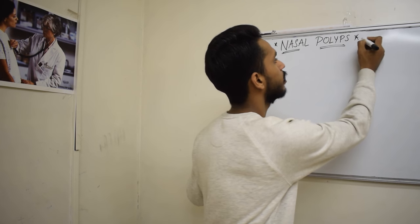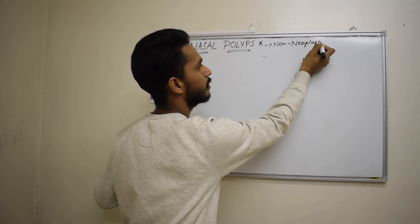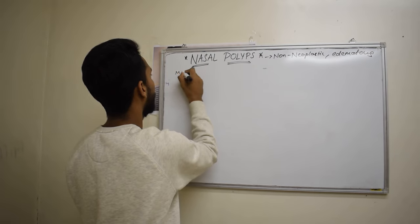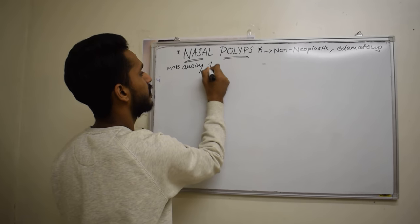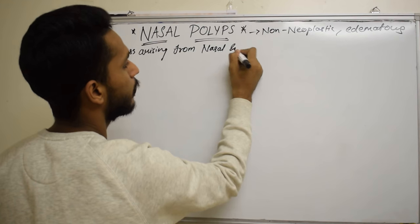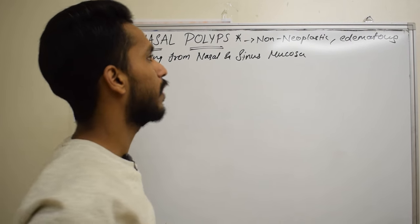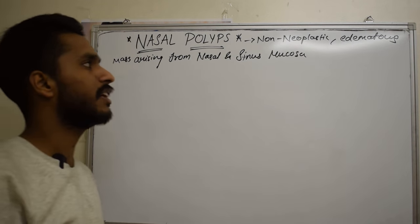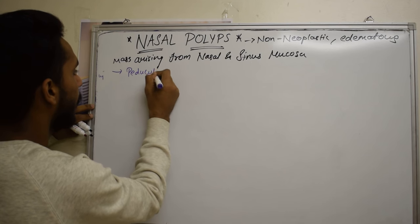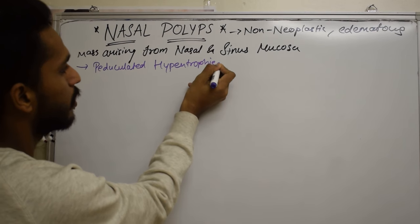What are nasal polyps? Nasal polyps are non-neoplastic edematous masses arising from either the nose or sinuses — specifically from the nasal and sinus mucosa. In other words, we can call them pedunculated hypertrophied edematous mucosa.